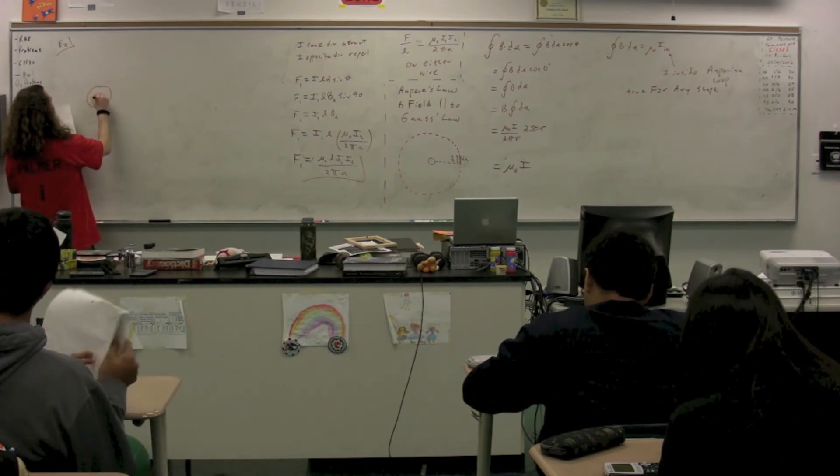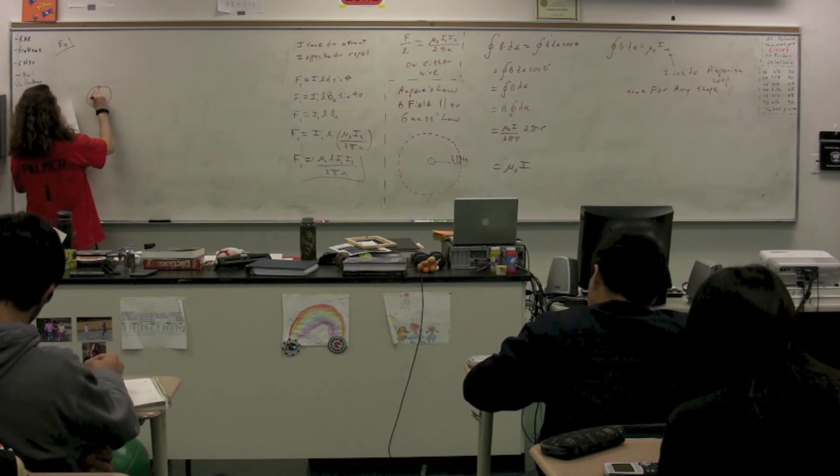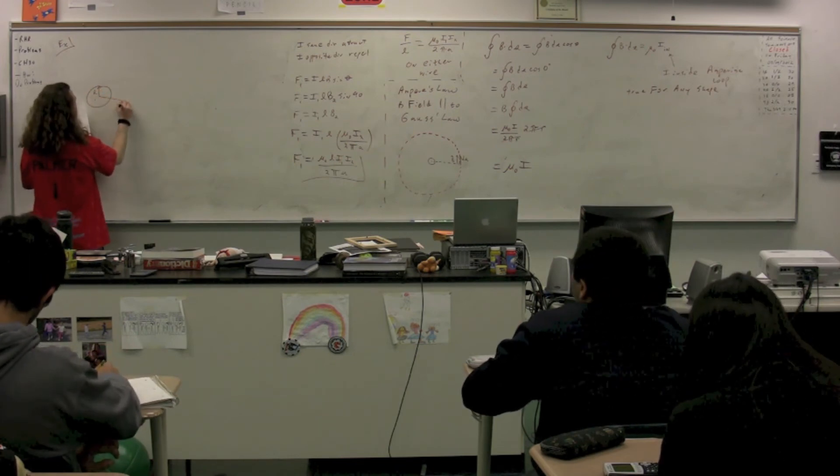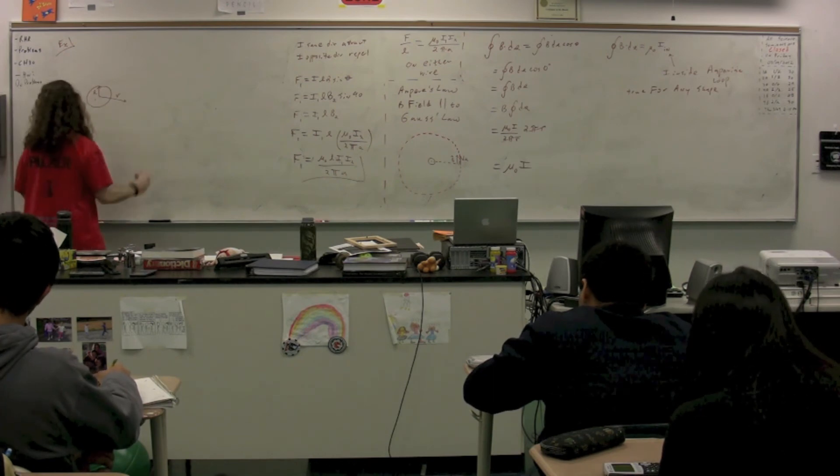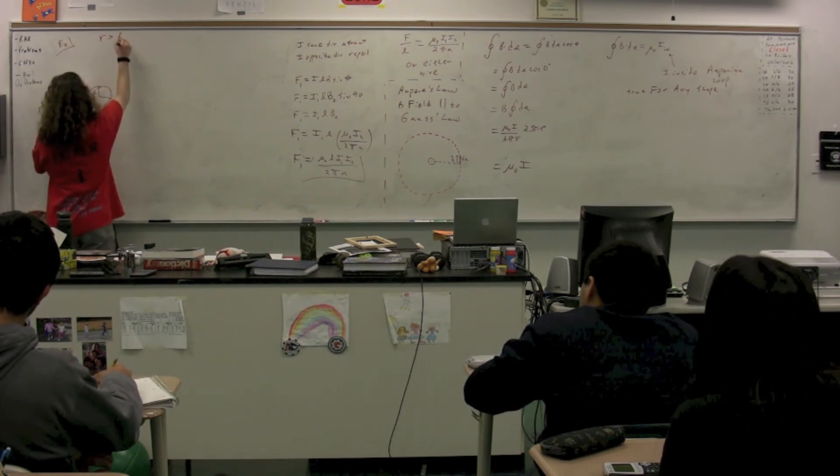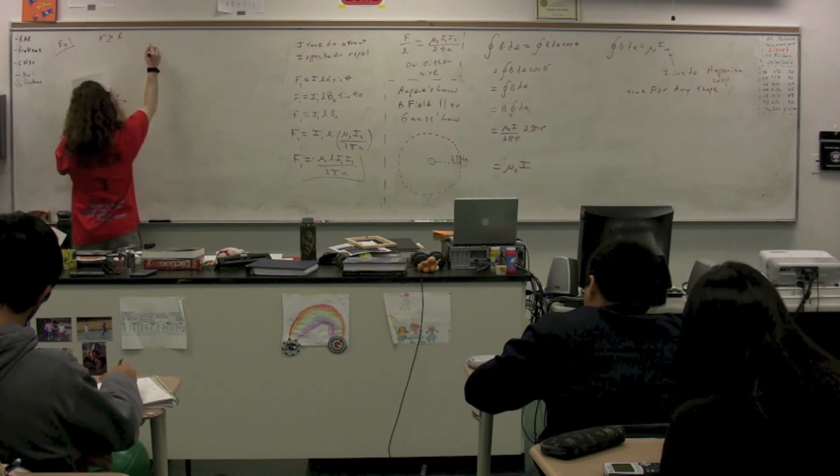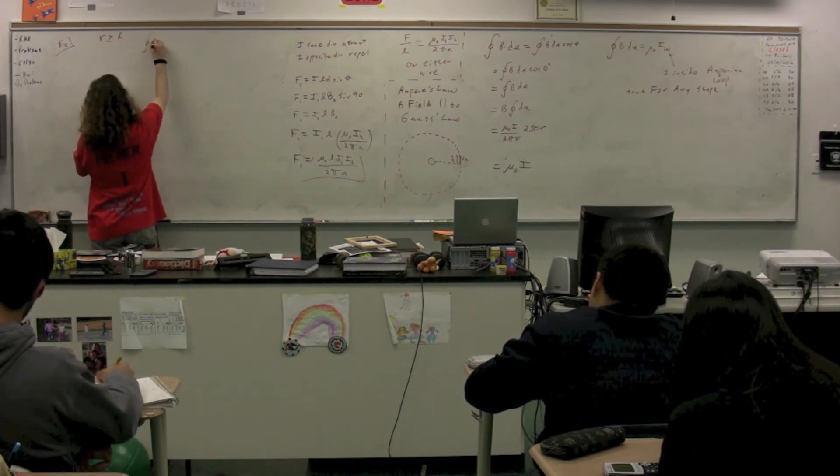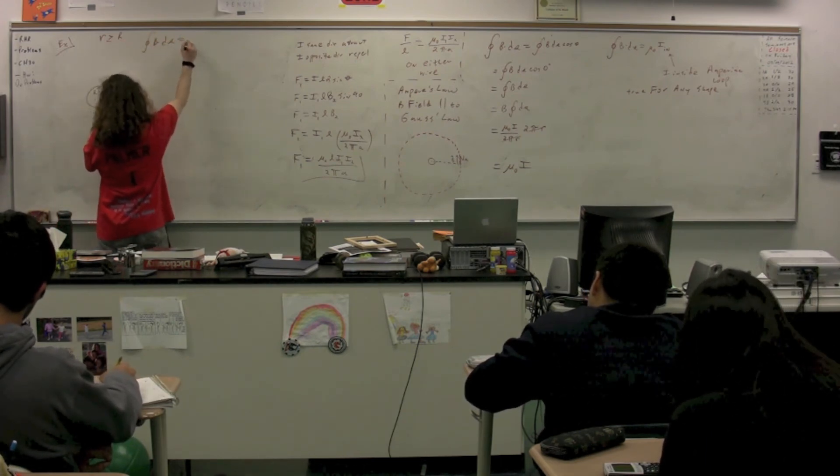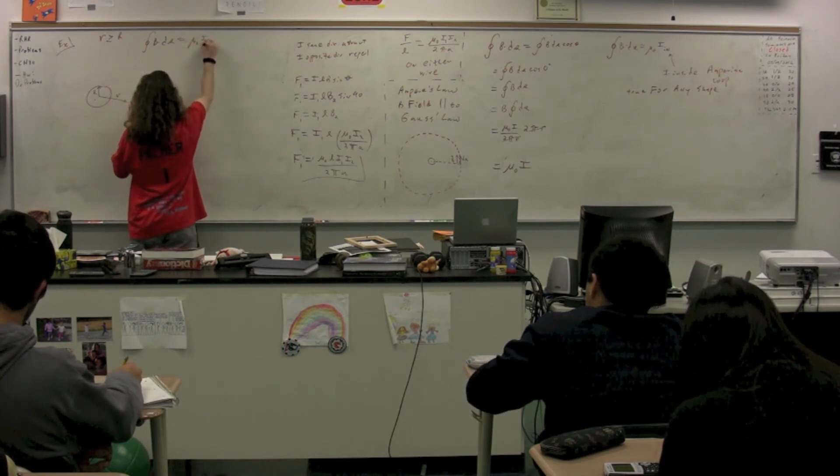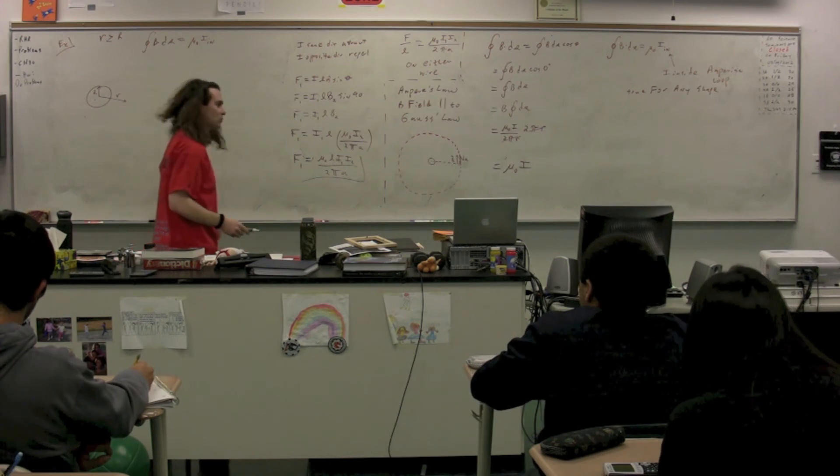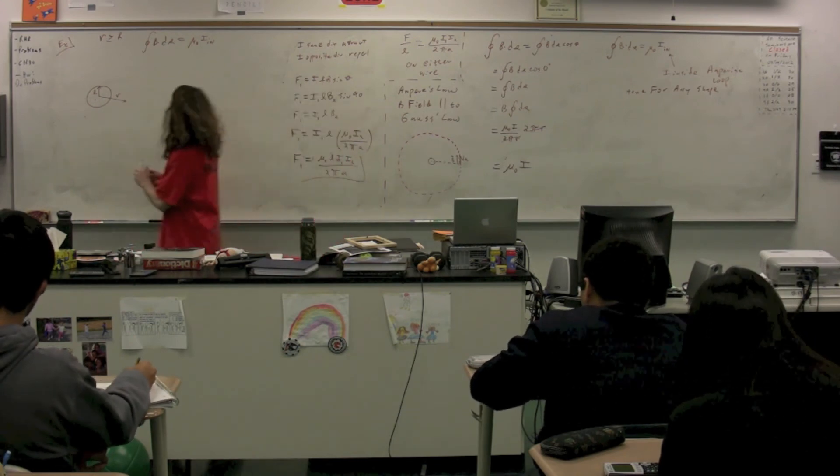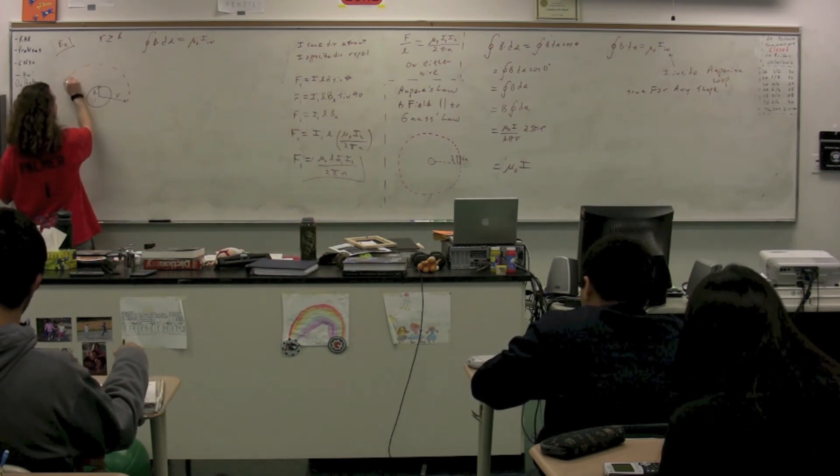We have a current carrying wire. It is carrying, the wire has a radius of big R, and we're figuring out the magnetic field at a location r from it. We are going to start out with r is greater than big R. And we're going to use Ampere's law, B, closed surface, or loop integral of B dot ds is equal to mu naught times the current inside. Now, we know that we need to draw our Amperian loop. Our Amperian loop is going to look like this.